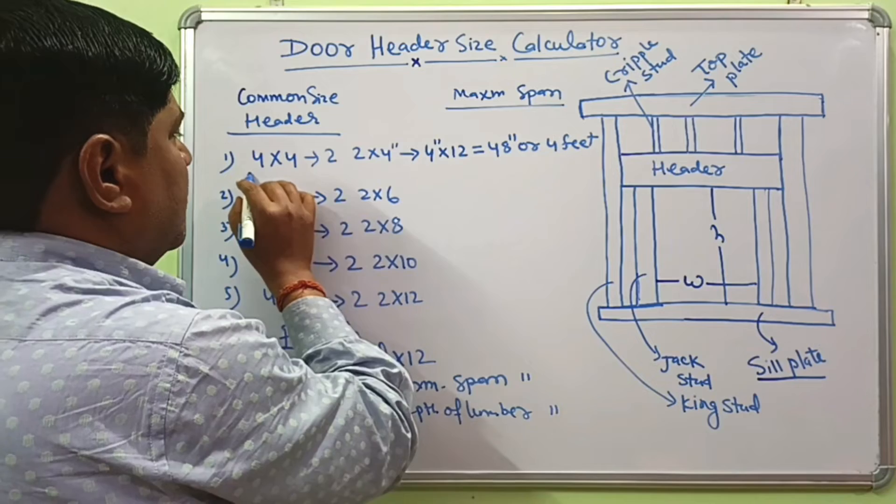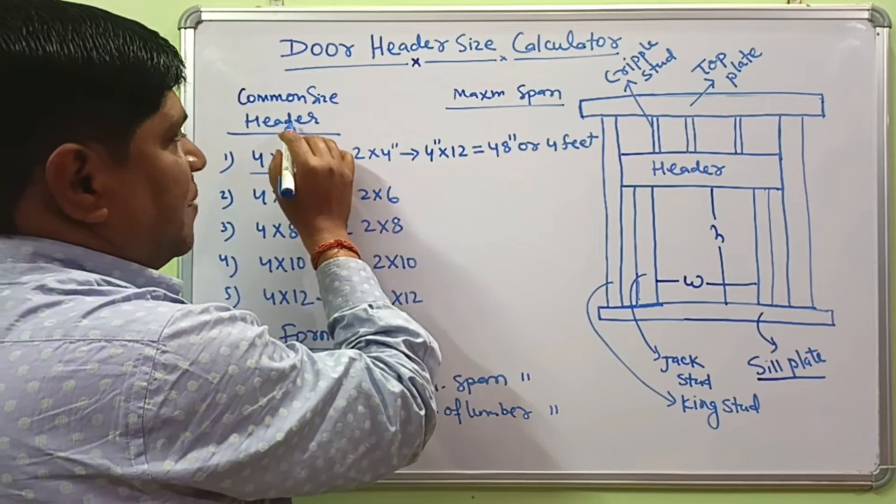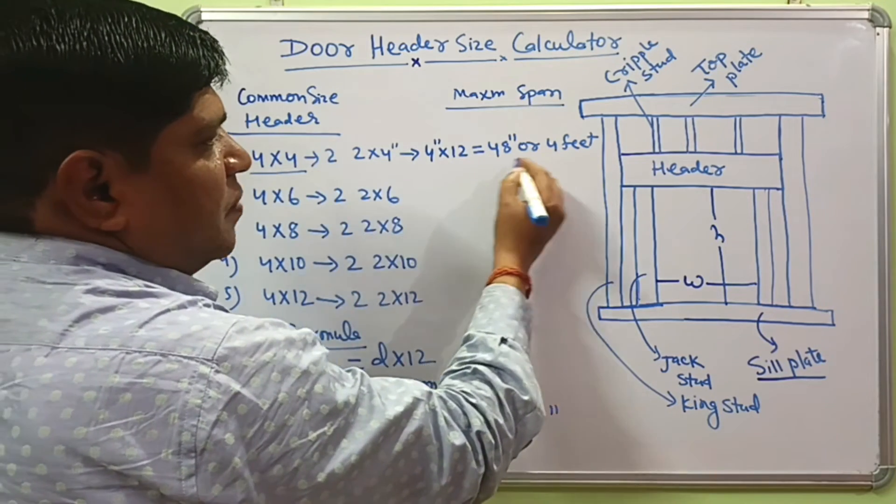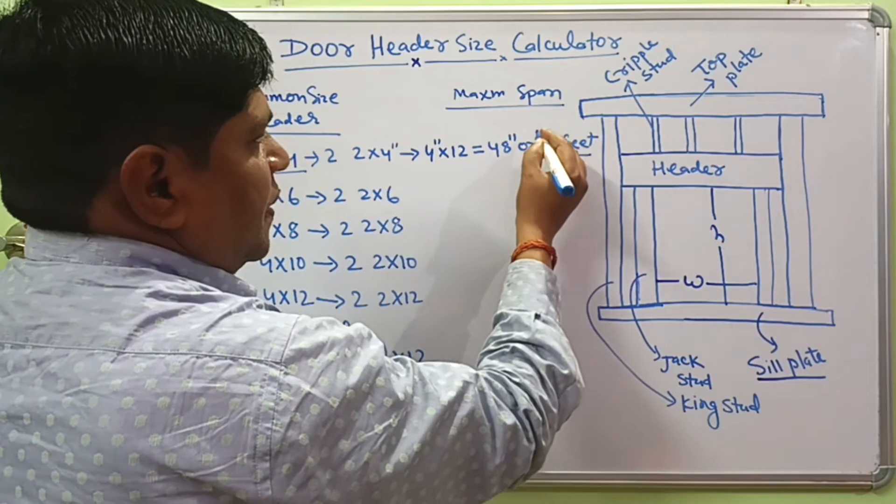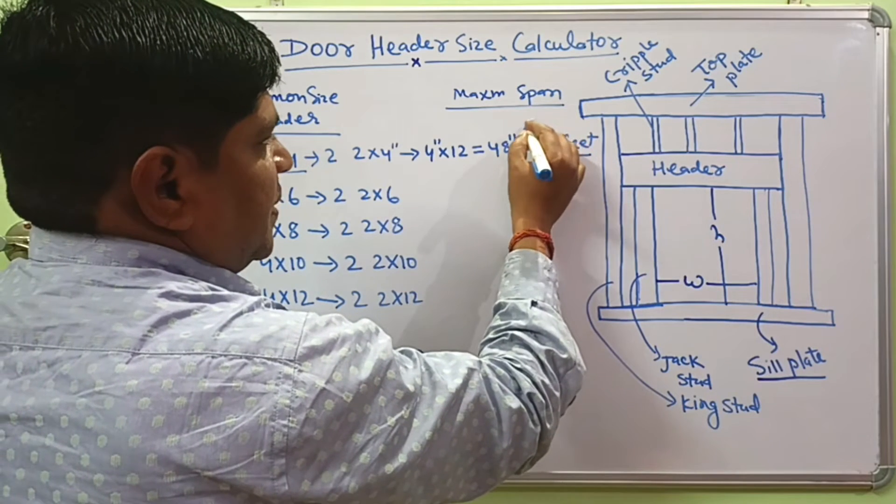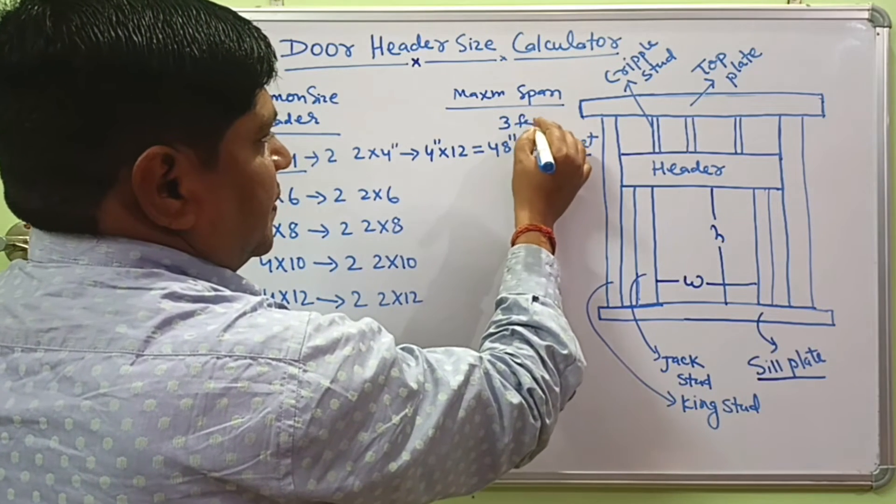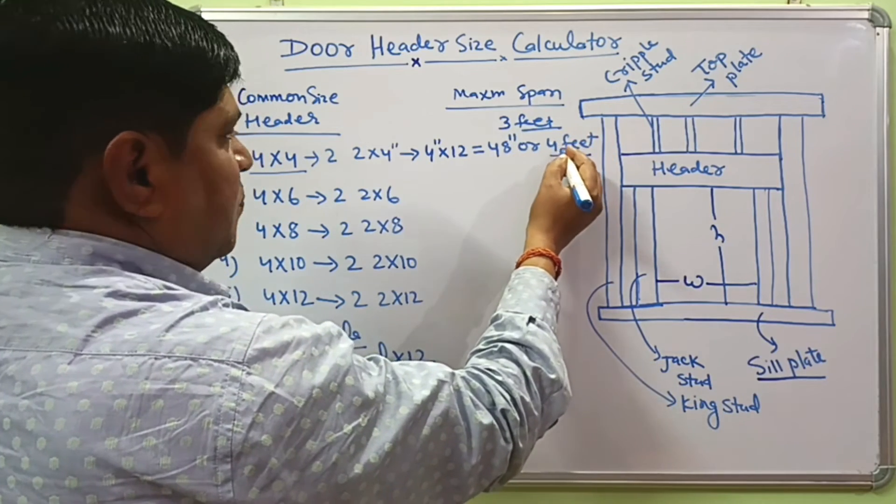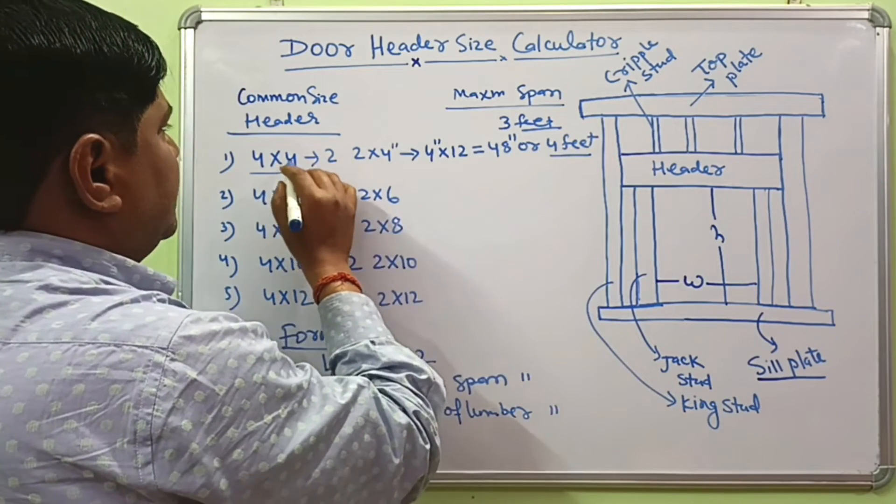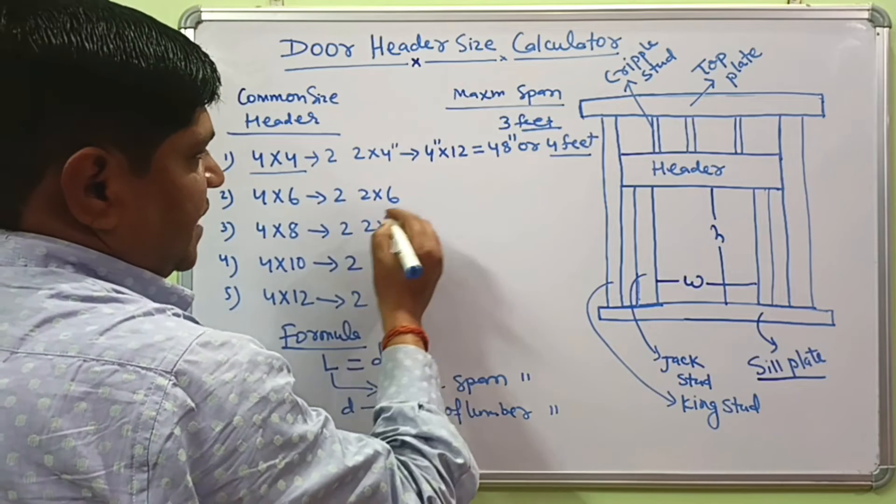It means 4 by 4 inches depth of header can span up to 4 feet or less. It may be 3 feet. If your span is 3 feet to 4 feet, then you can use the 4 by 4 header size.